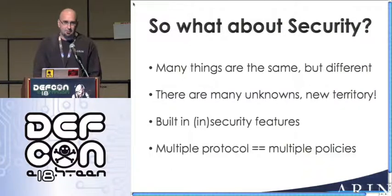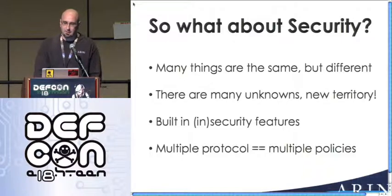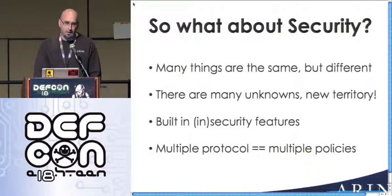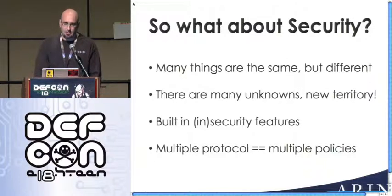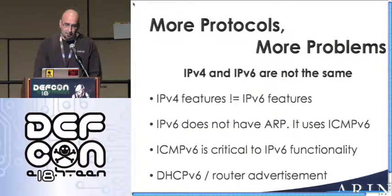The policy side is probably the most important thing. If you want a secure network, you have to make sure that decisions you make about what happens in V4 also happen in V6 in a similar way, wherever possible. More protocols, more problems.